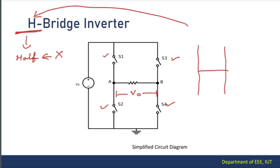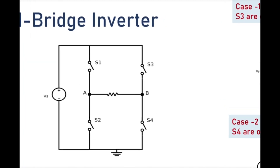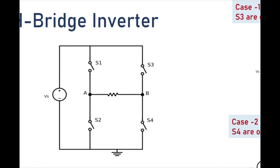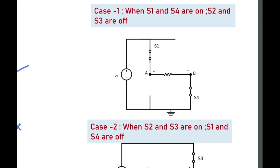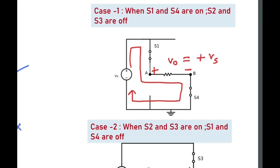Like the push-pull inverter, the H-bridge inverter also works in two modes. One mode is when S1 and S4 are conducting and S2 and S3 are kept open. Another mode is when S2 and S3 are conducting and S1 and S4 are kept open. In mode one, when S1 and S4 are conducting, the current flows through that path, and consequently the voltage at the AB terminal is of positive polarity — pretty much equal to the source voltage.